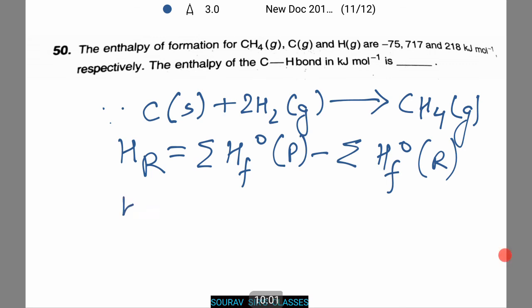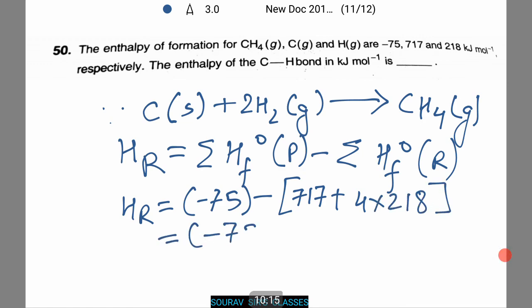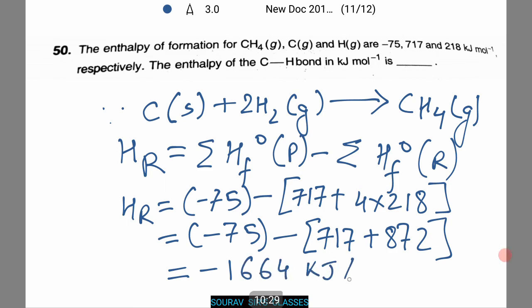Now HR equals minus 75 minus 717 plus 4 times 218. This equals minus 75 minus 717 plus 872. This equals minus 1664 kilojoules per mole.